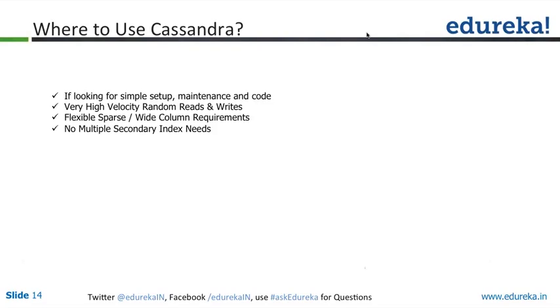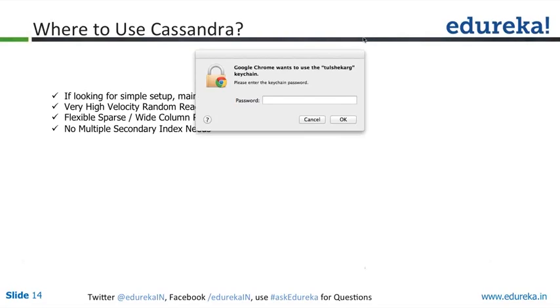Cassandra fits very well for time series data where consistency is not very critical. An example would be Twitter, where you're talking about very massive scale and high availability.